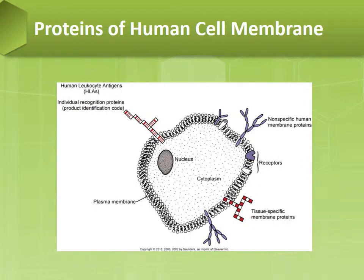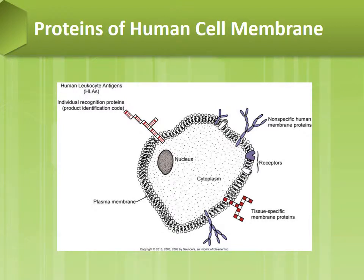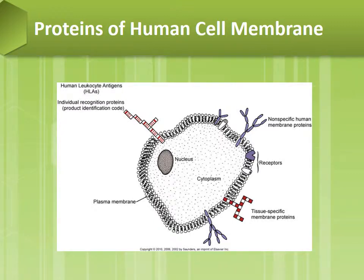This is a quick review of the proteins on human cell plasma membranes. It consists of non-specific human membrane proteins, tissue-specific membrane proteins, and individual recognition proteins.